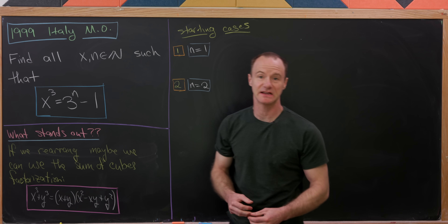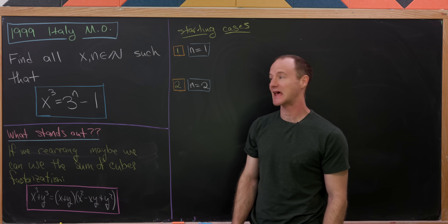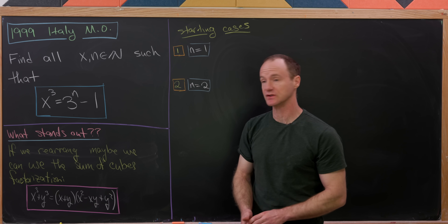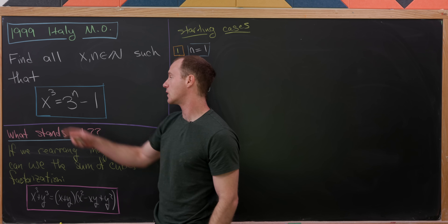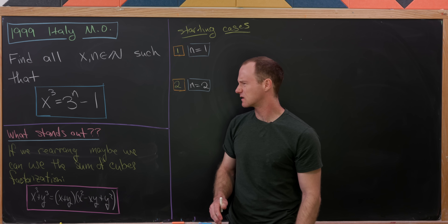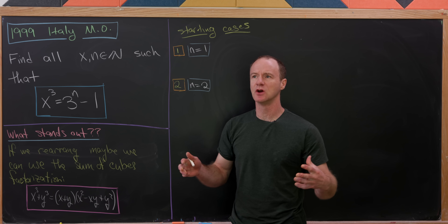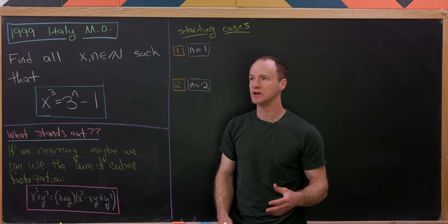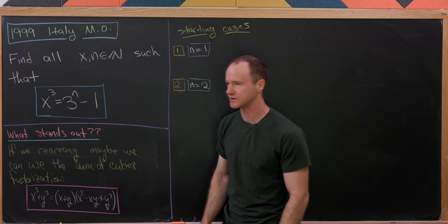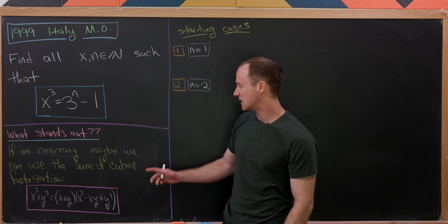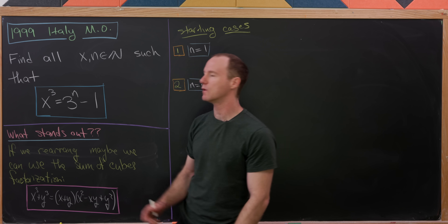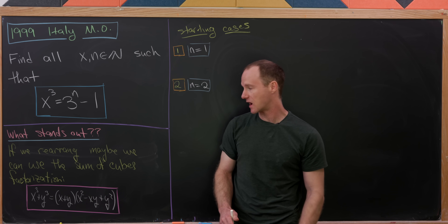Today we're going to look at a nice exponential Diophantine equation that comes from the 1999 Italian Math Olympiad. The problem is to find all positive integer solutions x and n to x³ = 3ⁿ - 1. A good first line of attack: if we add 1 to the other side and observe that 1 equals 1³, we could use the sum of cubes factorization, especially since the right-hand side is a prime power.